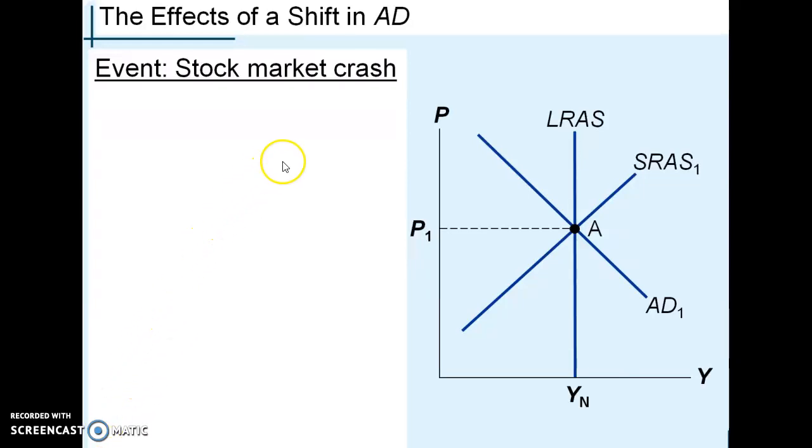I want to walk you through basically how a recession will play out with the diagram here. There's other factors besides the stock market crashing that can cause recessions, but this one is applicable especially for the Great Depression.